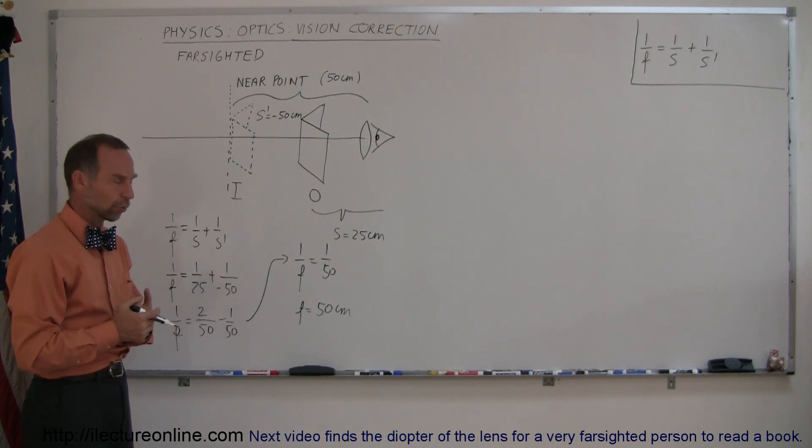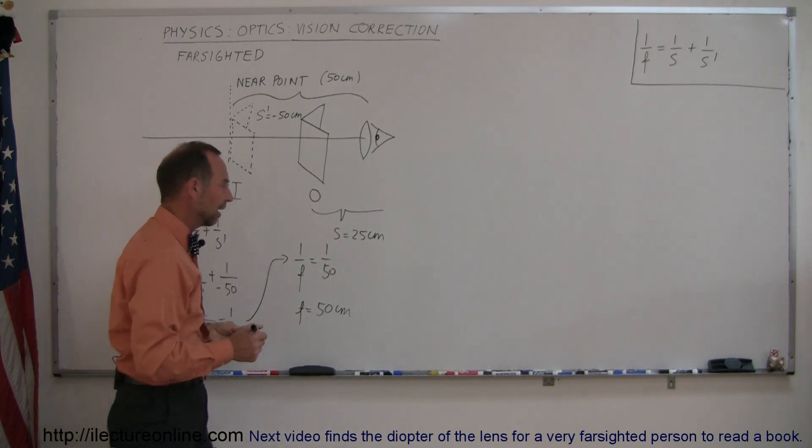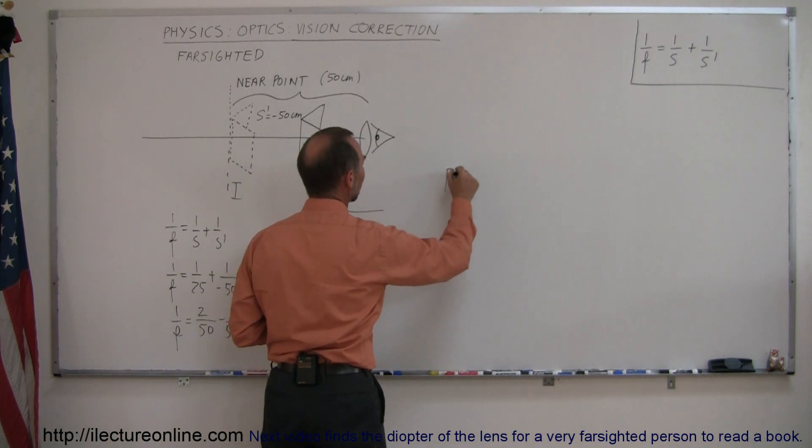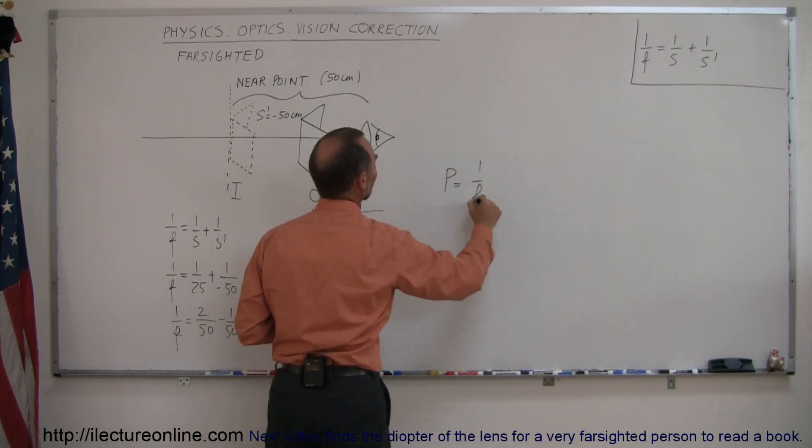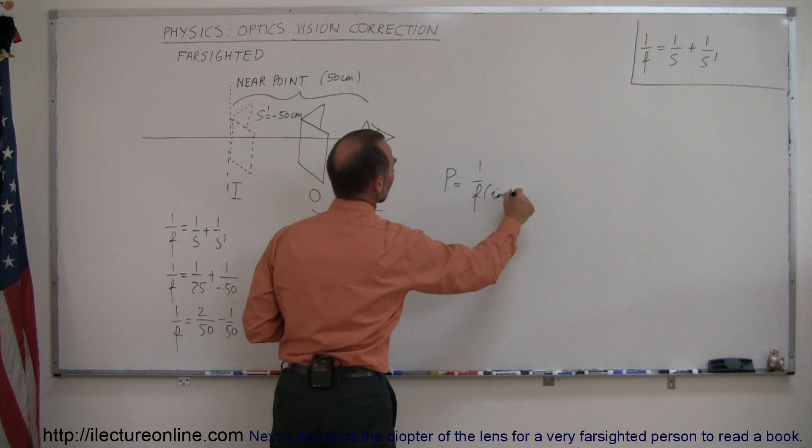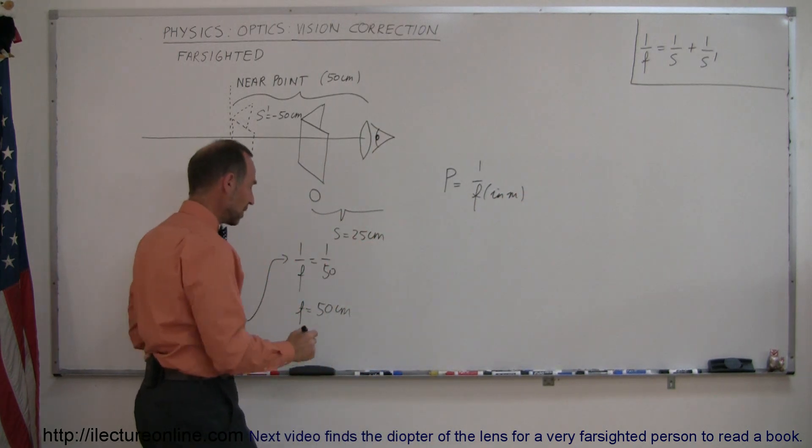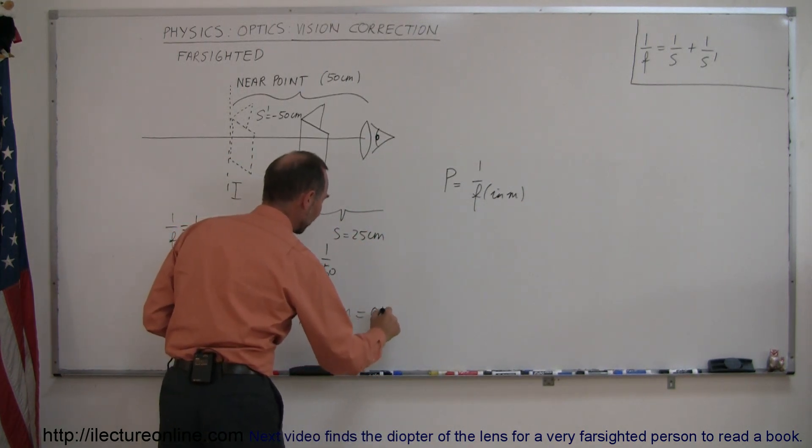Now, of course, you don't go to the store and buy a lens that says f equals 50 centimeters. You want to find the power, which is 1 over the focal length in meters. So that means we have to convert this to meters, which is equal to 0.5 meters.